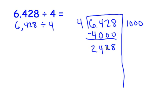Let's take out 500 groups of 4. 500 times 4 is 2,000. Subtract.